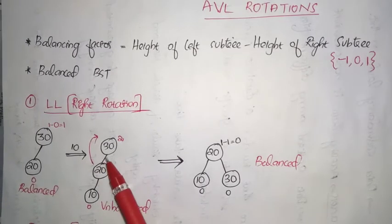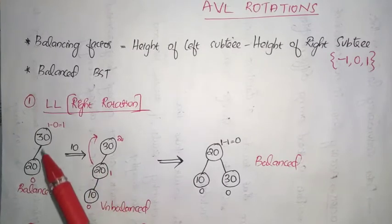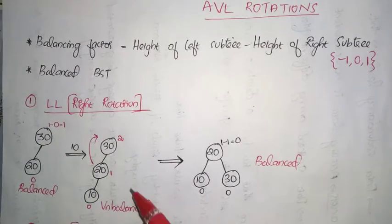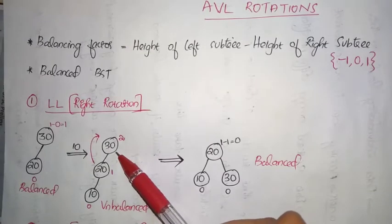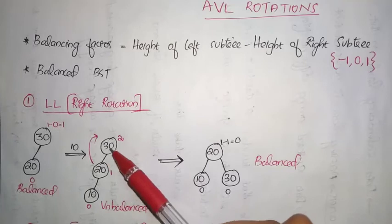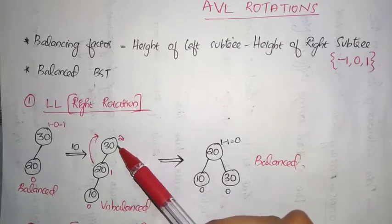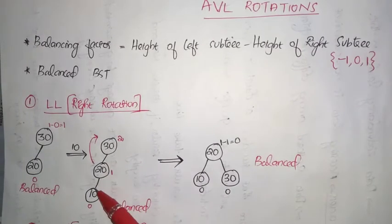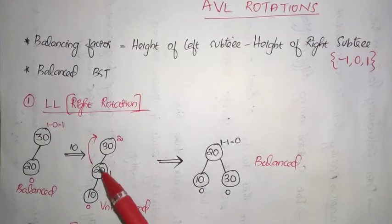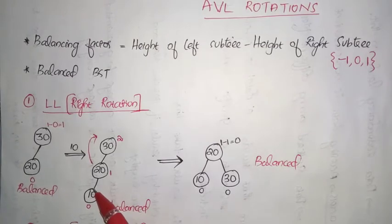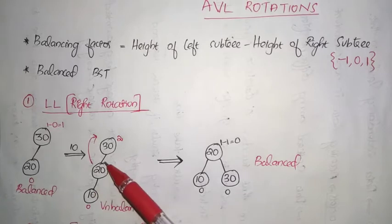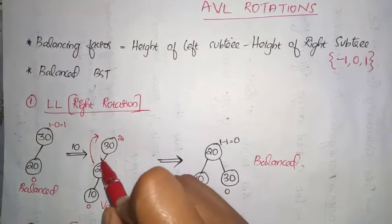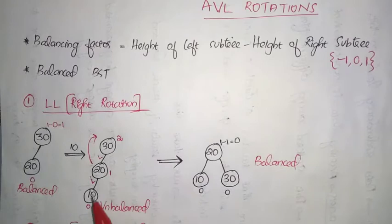This is the case where we have to perform an LL rotation. LL means this imbalance occurred because we inserted a node to the left of the left child — imbalance occurred since we inserted a node into the left child of the left of the unbalanced node.